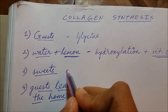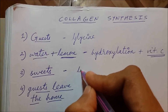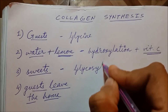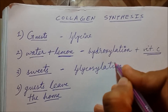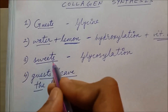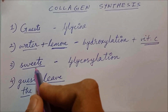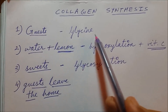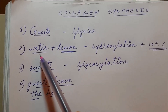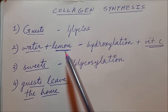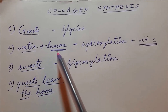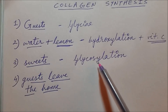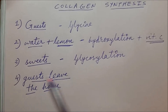The third step is giving sweets to the guest. Why sweets? This helps me remember glycosylation — adding sugar, glucose. So: guests arriving = glycine; give them water with lemon = hydroxylation with vitamin C; give them sweets = glycosylation.